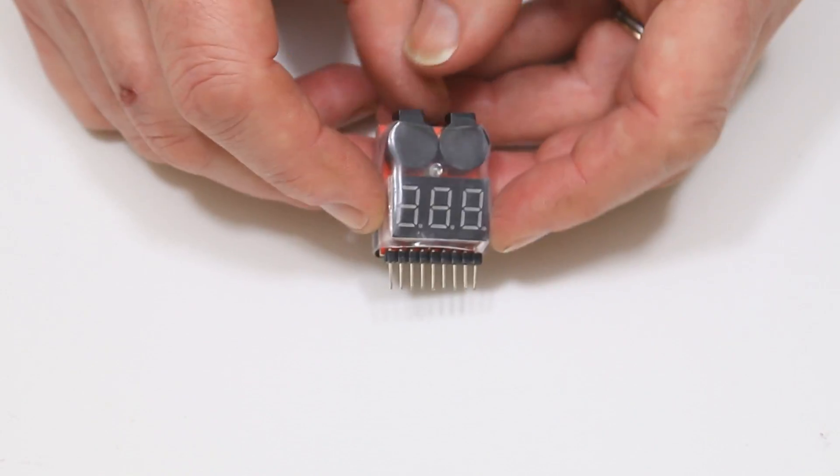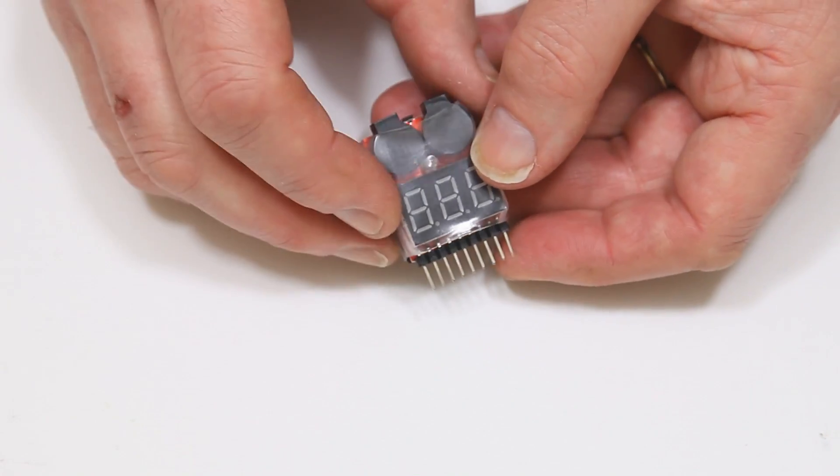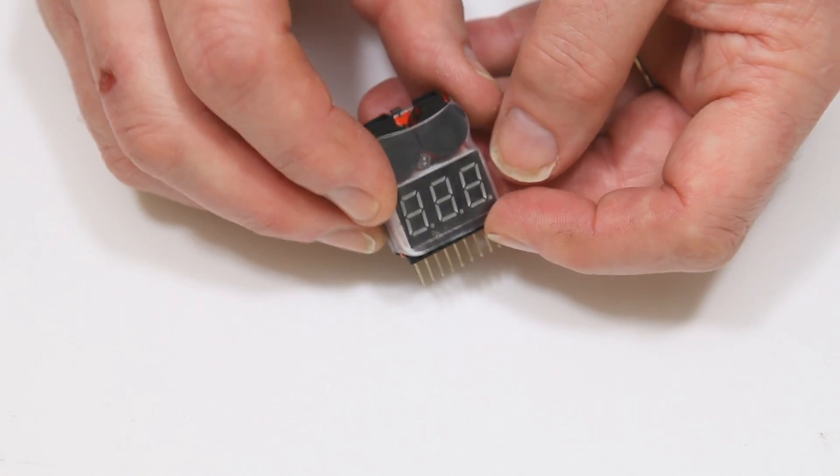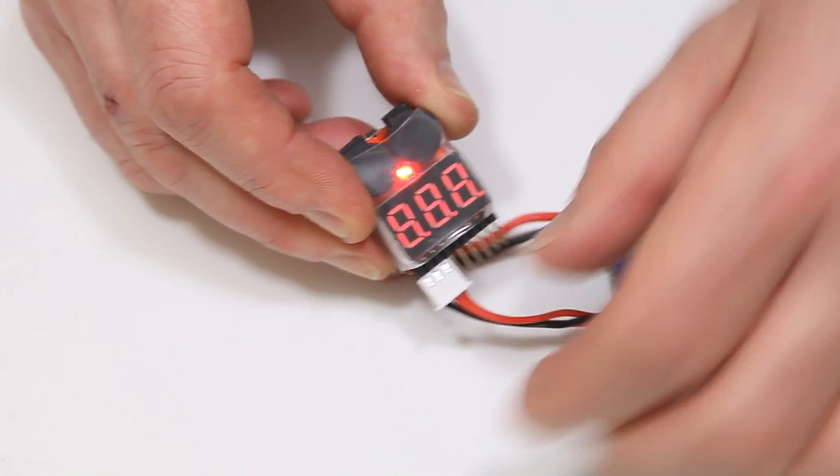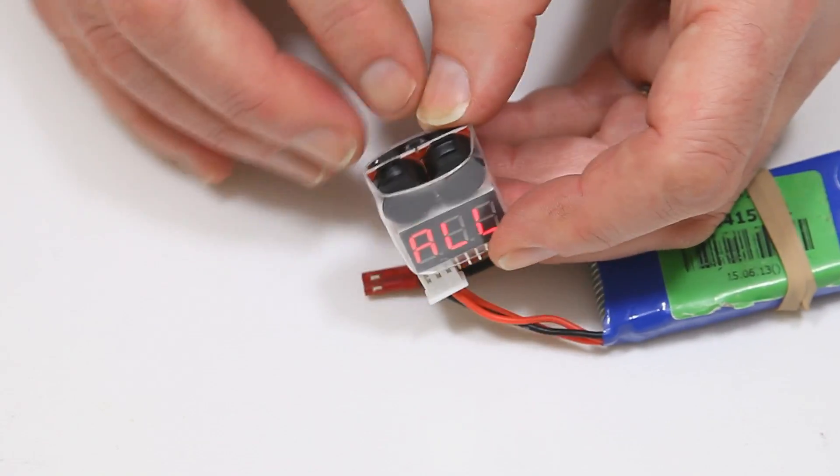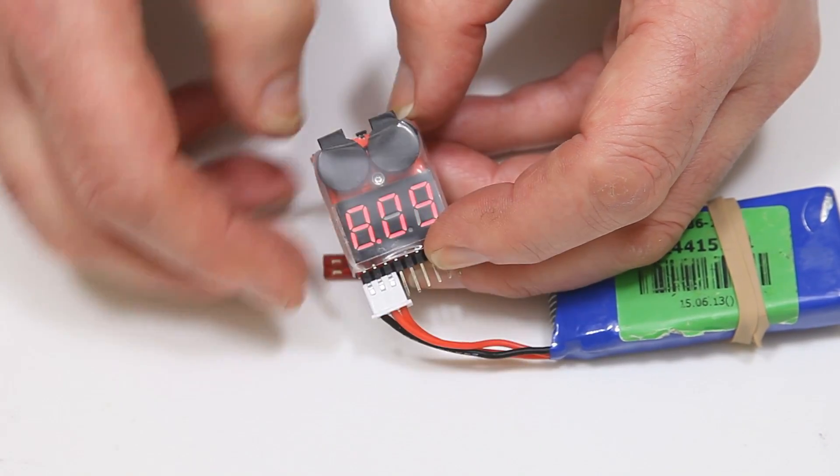The other thing this lovely little gadget does is it's got an onboard beeper as you could clearly hear there but it's a warning buzzer as well. So if I just pop that one back in again there's a little tiny button just on the top here, there's no power on this unit it only draws from the actual battery that you attach to it.